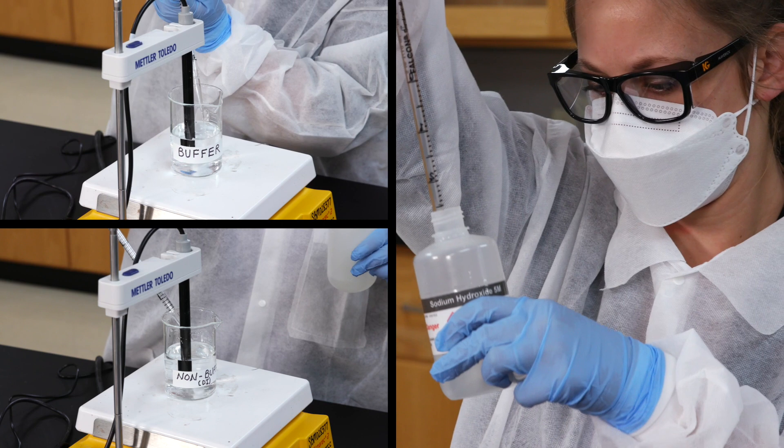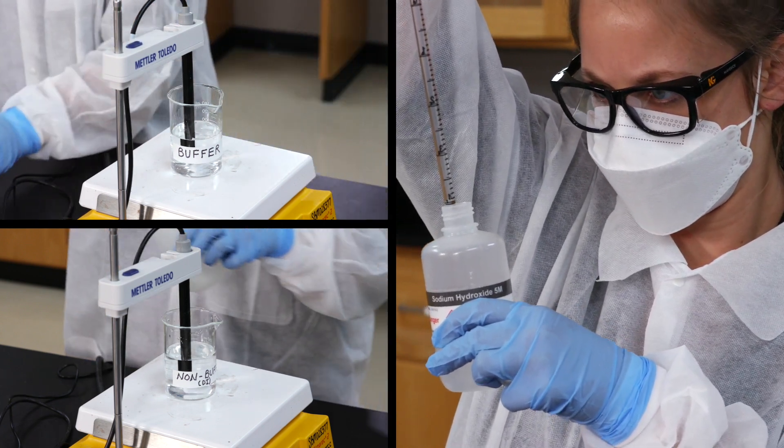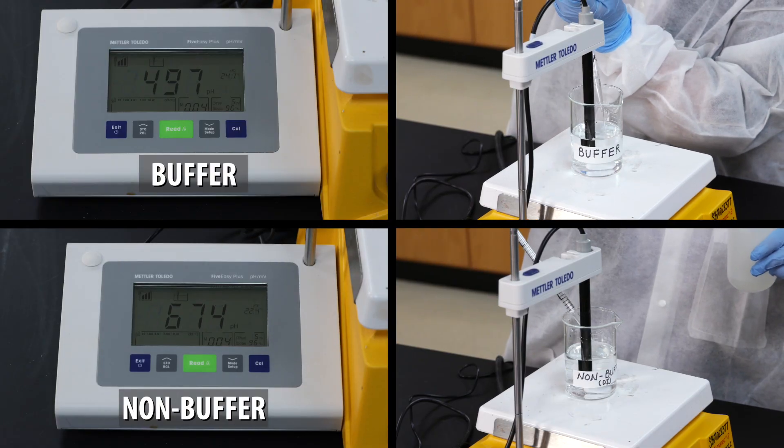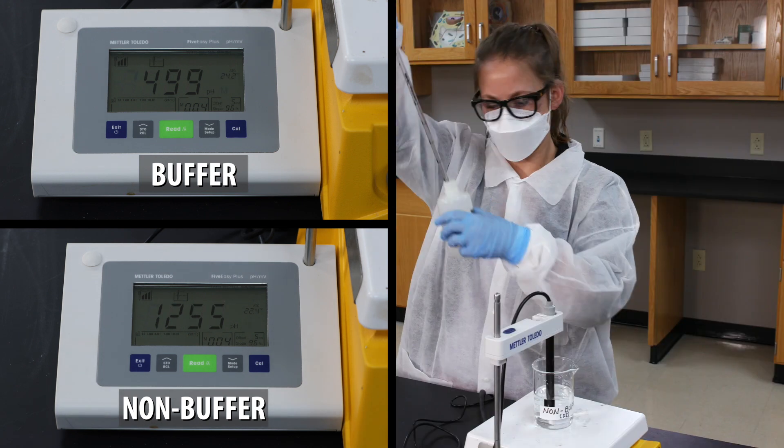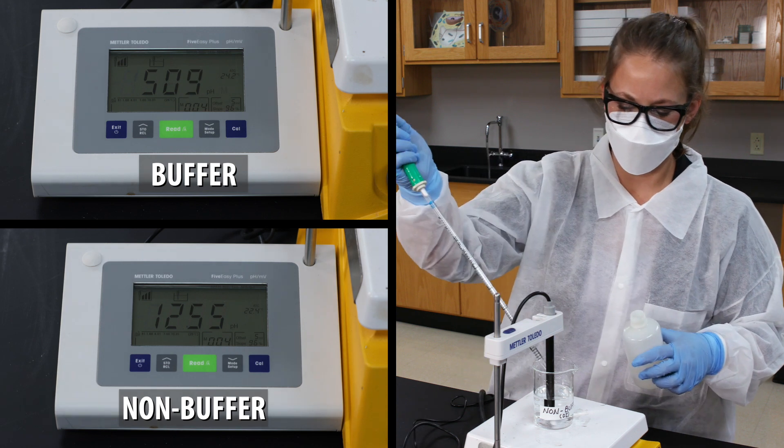Pipet one milliliter of our base, the sodium hydroxide, into each beaker. The buffer resists the change in pH much better than the deionized water. The water's pH goes all the way to 12.55.